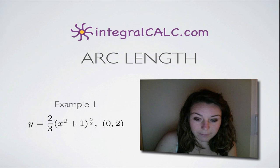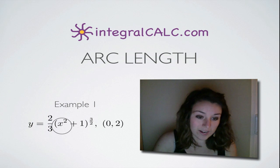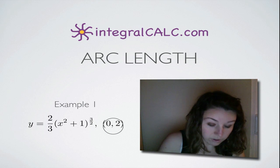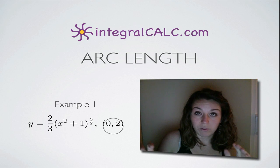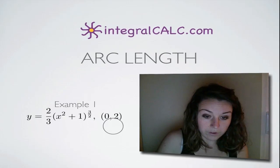The example we're going to be doing today is y equals two-thirds times the quantity x squared plus one to the three-halves. And we're going to be evaluating on the range zero to two. So we're trying to find the length of the graph between x equals zero and x equals two. Let's go ahead and get started.